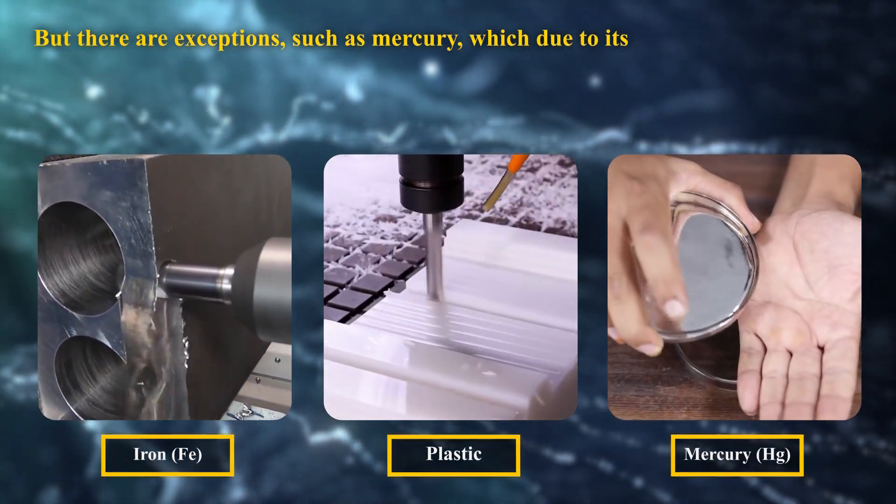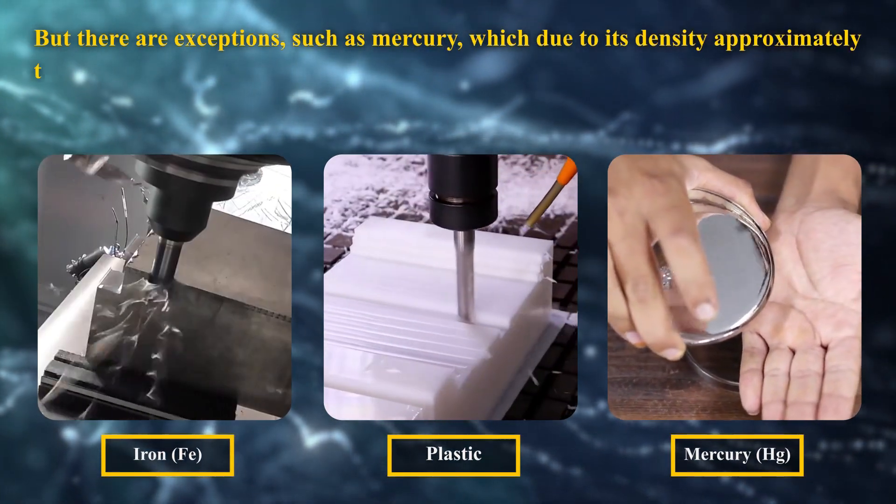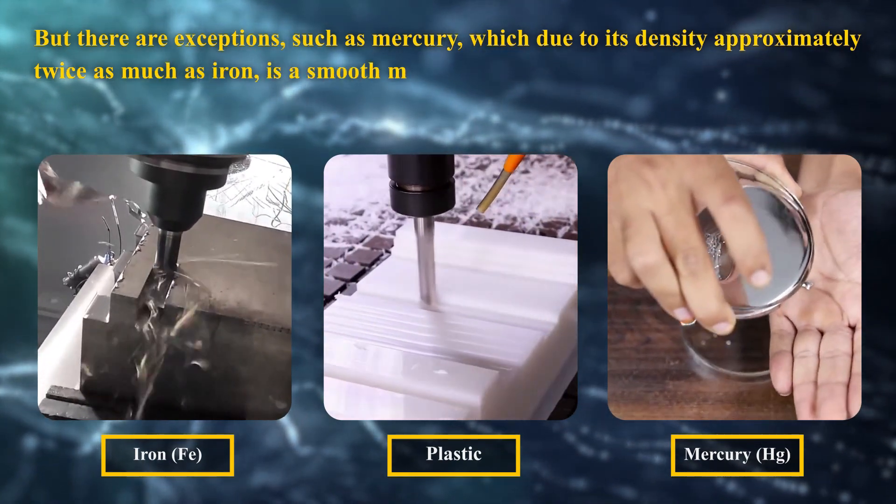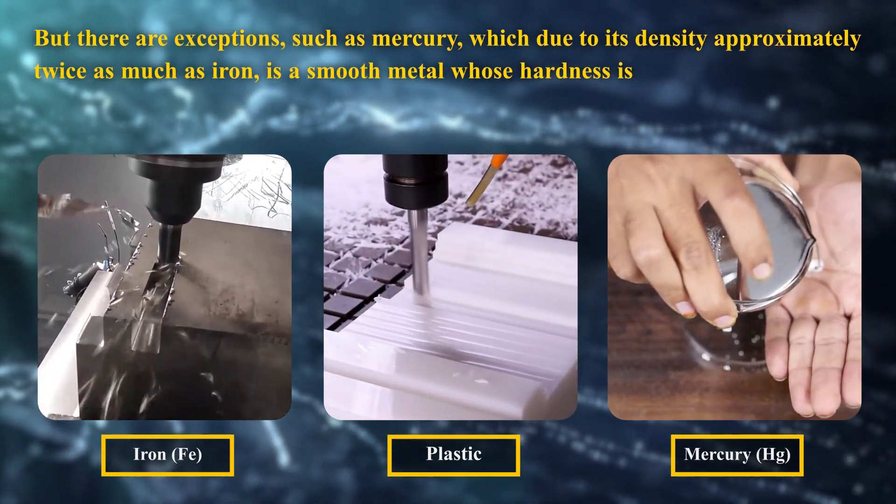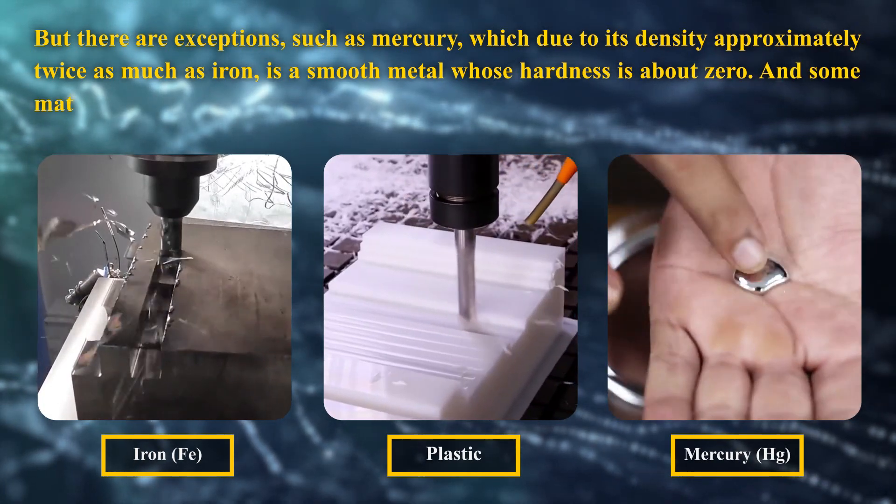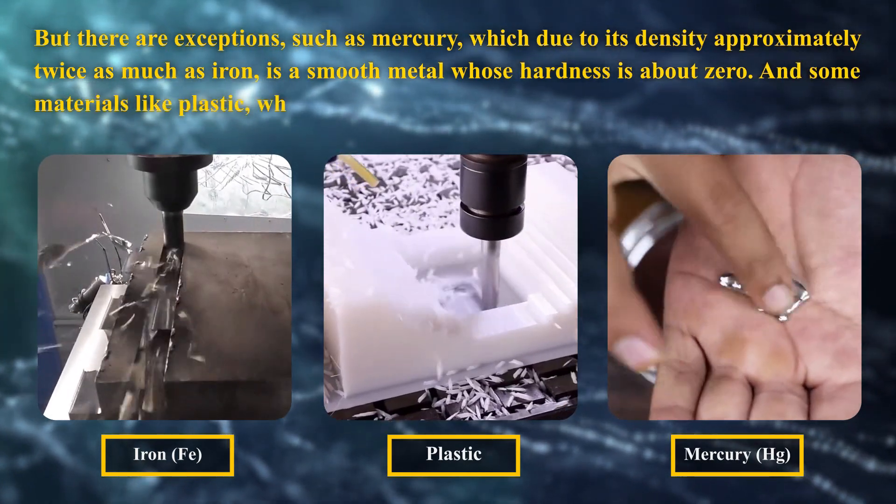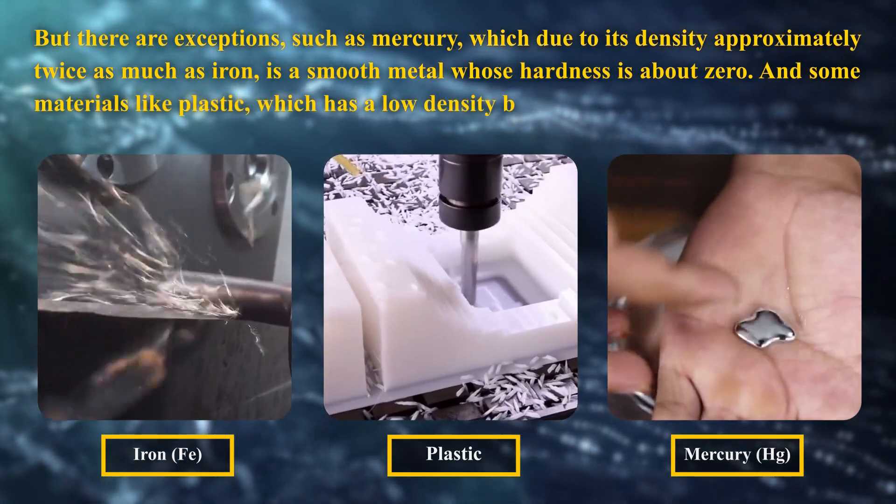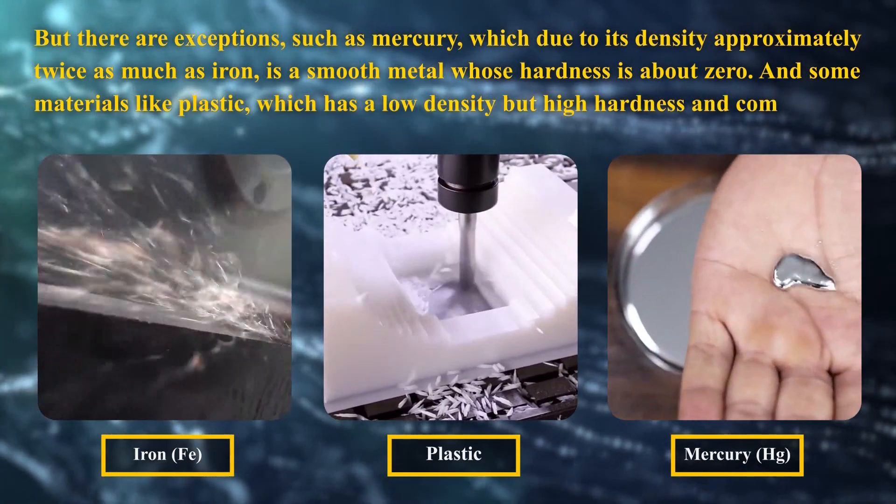But there are exceptions, such as mercury, which due to its density approximately twice as much as iron, is a smooth metal whose hardness is about zero. And some materials like plastic, which has a low density but high hardness and compression.